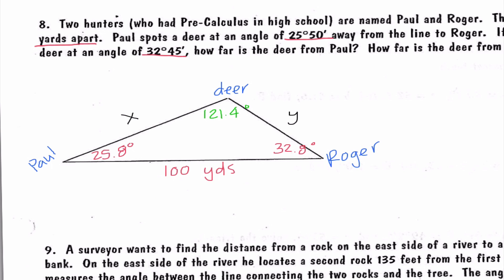So I'm going to find x first. I'm going to say x over the sine of 32.8 degrees equals 100 over the sine of 121.4 degrees. My guess is that we are pretty good at going through and solving these at this point. So I'm just going to let you know when we cross multiply and divide, I should end up getting 63.5 yards. So that's how far away Paul is from the deer.